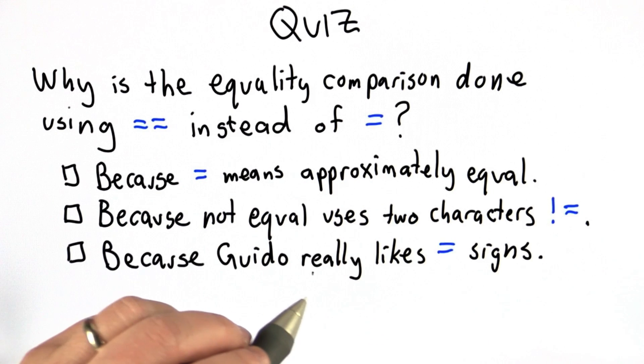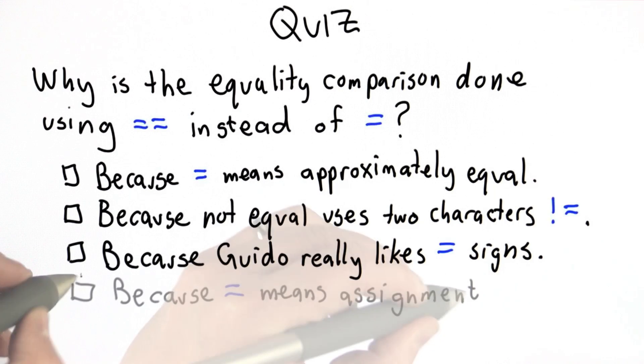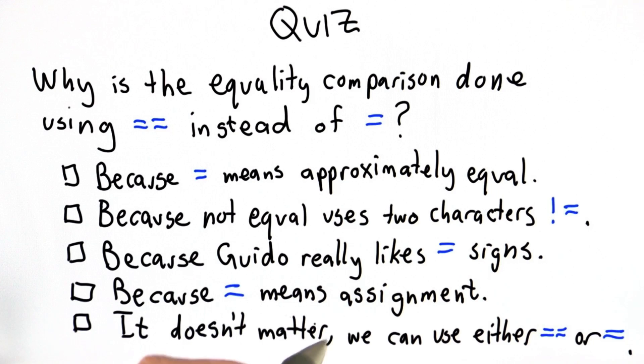Because Guido, the designer of Python, really likes equal signs. Because the single equal sign means assignment. Or it doesn't really matter, we could use either double equal or single equal.